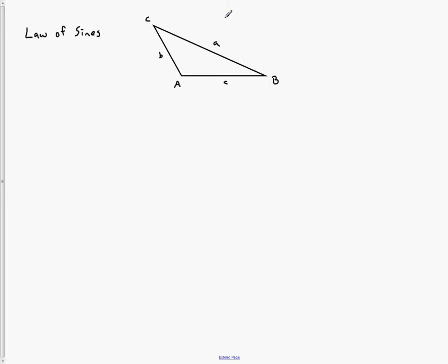That's the labeling convention. Any triangle at all will always have this correlation: sine of big A over a equals sine of big B over b, which also equals sine of big C over c. All of these values will be equal. As long as I've got three values to plug in — not all three angles or all three sides — I should be able to find some other value.